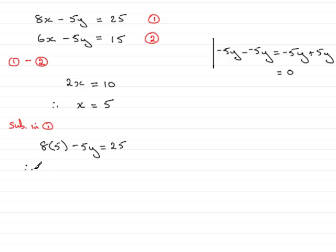Tidying this up, we therefore have 40 minus 5y equals 25. So what I'm going to do is add 5y to both sides, so we have 40 equals 25 plus 5y. Now subtract 25 from both sides, and I end up with 40 take away 25, which is 15, equals 5y. Now divide both sides by 5, and you end up with 3 equals y. Or in other words, y equals 3.